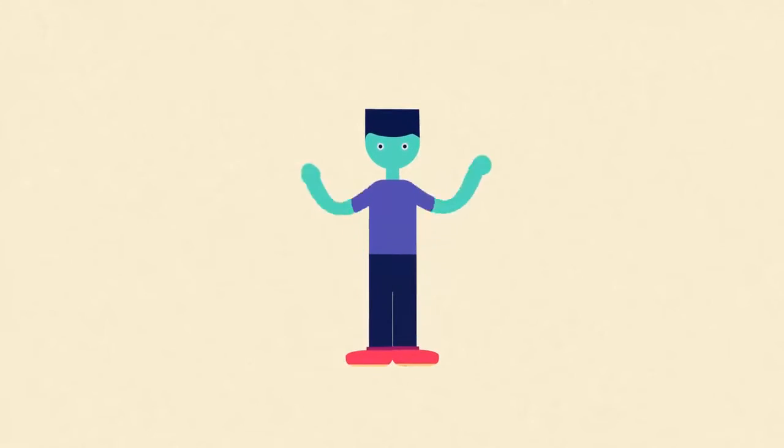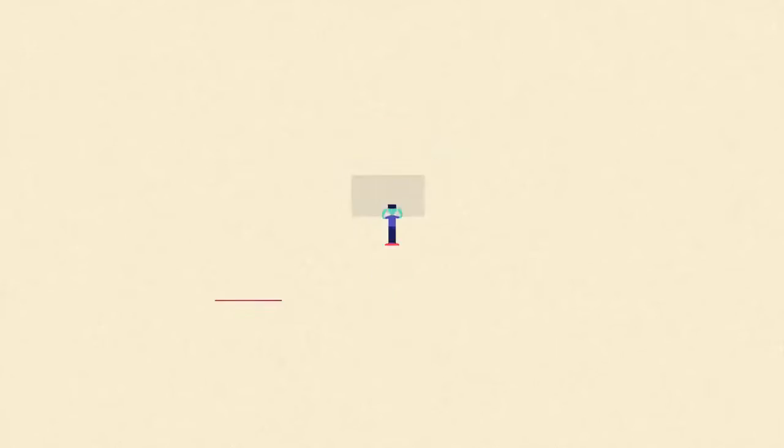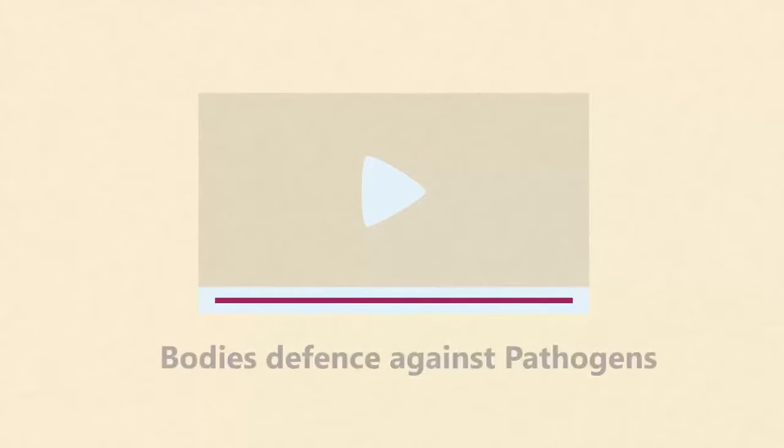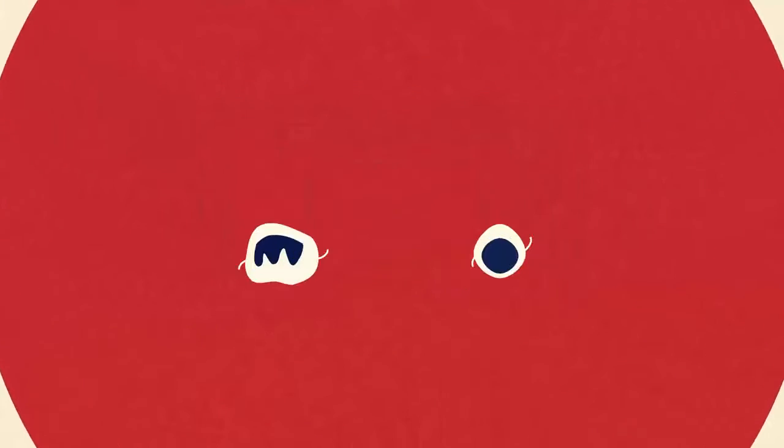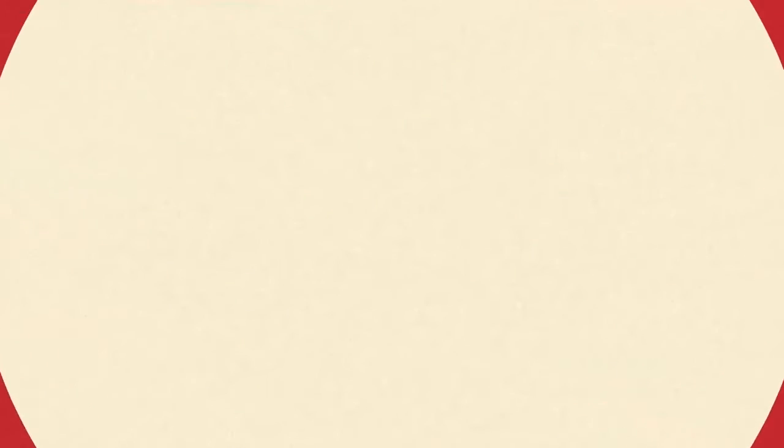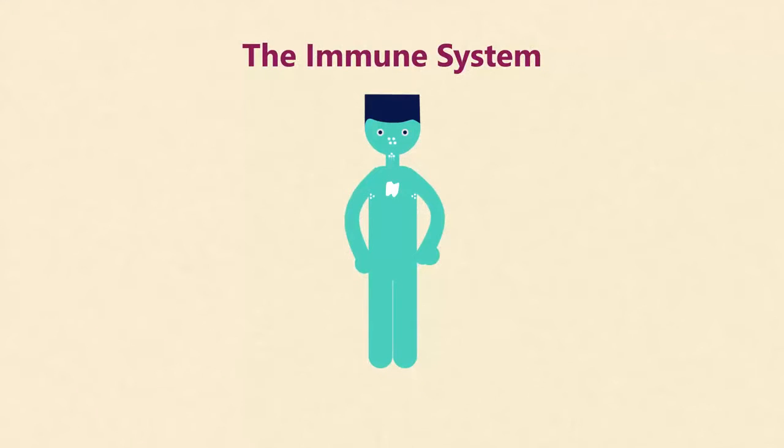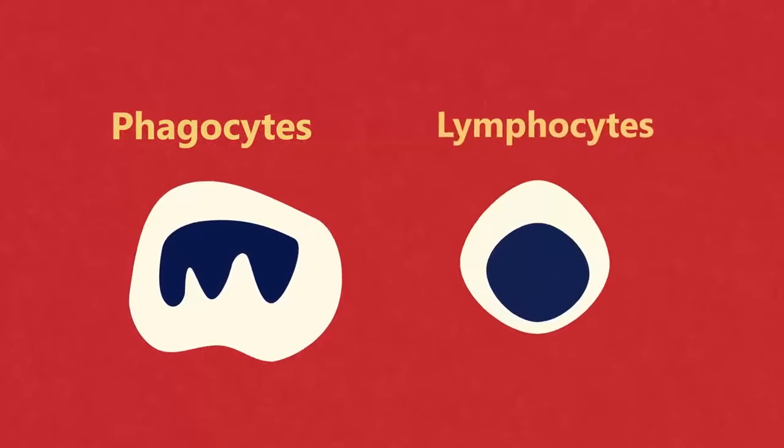Our body has a first line of defense which we saw in the video on body defense against pathogens. But when this fails our white blood cells kick into action. White blood cells are the cells of our immune system. There are two types of white blood cells: phagocytes and lymphocytes.